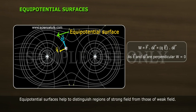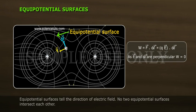Equipotential surfaces help to distinguish regions of strong field from those of weak electric field. Equipotential surfaces tell the direction of electric field. No two equipotential surfaces intersect each other.